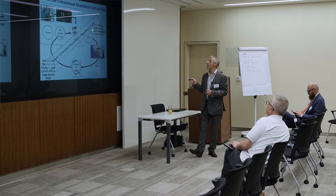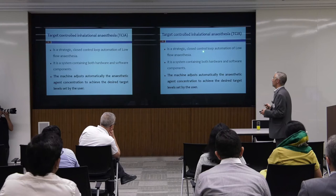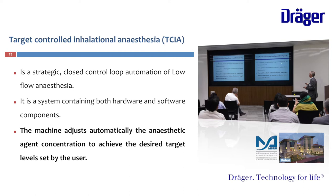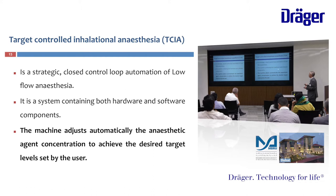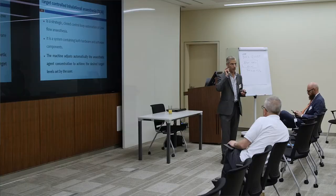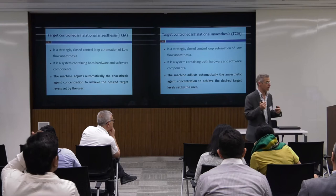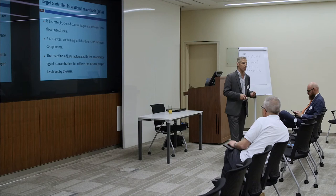We can do this by target-controlled inhalational anesthesia. What are the benefits? Why do we need it? Target-controlled inhalational anesthesia is a strategic closed control loop automation of low-flow anesthesia. It is a system containing both hardware and software. The machine adjusts automatically the anesthetic agent concentration to achieve the desired target level set by the user. All we need to do is adjust the end-tidal volatile anesthetic that we need and let the machine do it automatically.